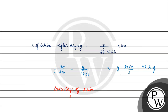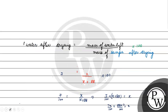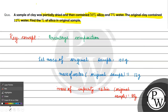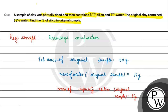Percentage of silica in original sample equals mass of silica divided by mass of original sample, into 100, which equals 47.31 percent. This is the final answer for this question. I hope you understood it well. Thank you. All the best!